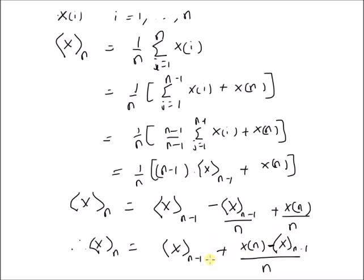This can be viewed as an adjustment to the previous sample mean. We have a sample mean at n minus 1 and the latest measurement. Then we adjust the sample mean with this term: x(n), the latest measurement minus the previous sample mean divided by the index of the measurement.